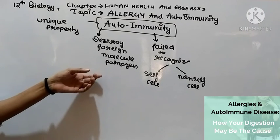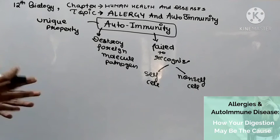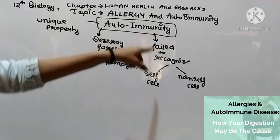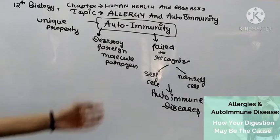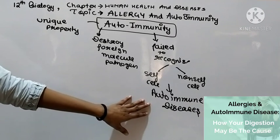When the immune system fails, it starts destroying the self body cells and body proteins, which actually play a role in growth and development. At that time, this autoimmunity is called autoimmune disease. We can define it as: when the immune system of the body starts destroying self cells or molecules which are important for our body, that is called autoimmune disease.